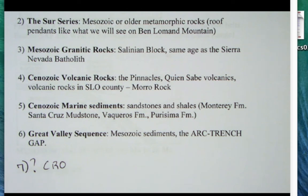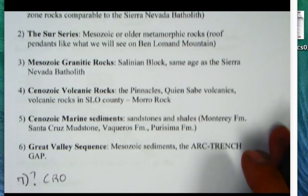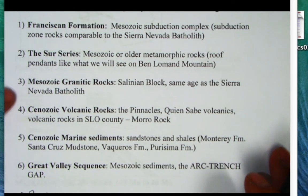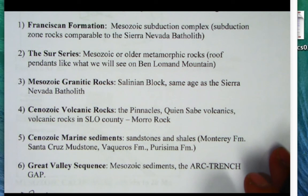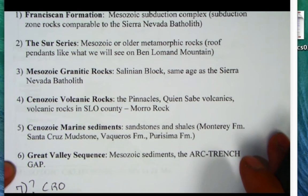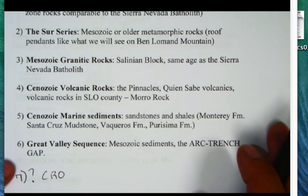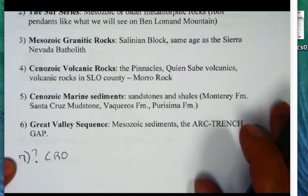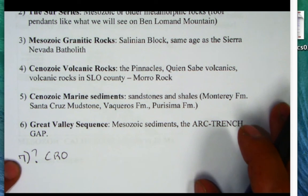The sixth unit is the Great Valley Sequence — Mesozoic sediments deposited in the basin between the subduction zone trench and the magmatic arc of the Sierra Nevada — the forearc basin sediments. A seventh unit, the Coast Range Ophiolite (CRO), is exposed only on the east side of the Coast Ranges. Ophiolite also underlies the Central Valley, and you can see it at Alum Rock Park in San Jose.